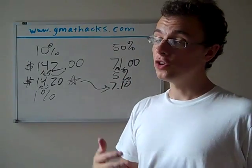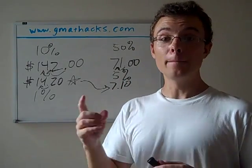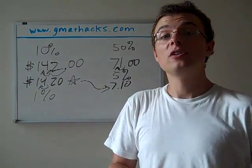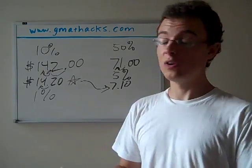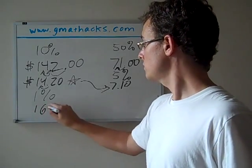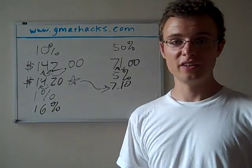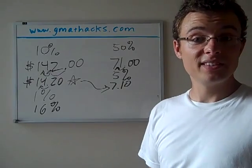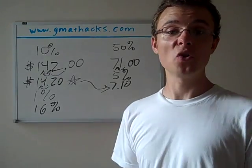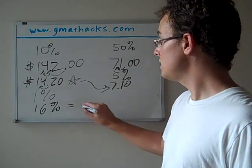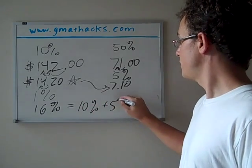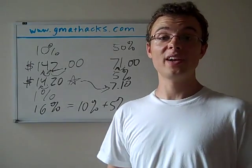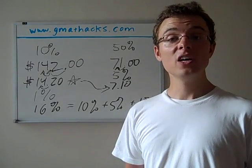Now, on the GMAT, you're not going to just see 10%, 5%, 1%. But you are going to see percents that you can build up from 10%, 5%, and 1%. Take, for instance, 16%. This is a little bit of a fake example that I generated just for this exercise, but I have seen 16% on GMAT questions, and it's a great illustration. 16 is 10% plus 5% plus 1%. We know how to get 10. We know how to get 5. We know how to get 1.